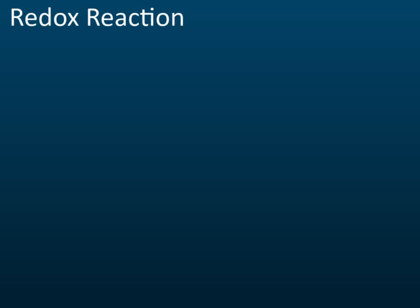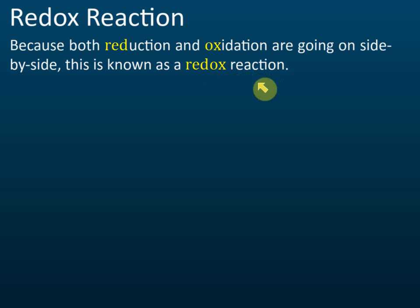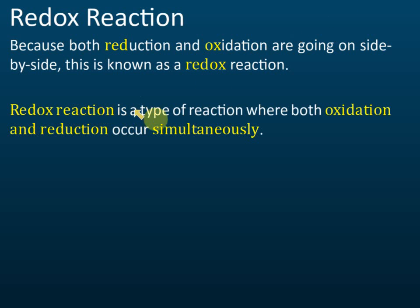Reduction and oxidation occur at the same time in what we call a redox reaction. 'Red' comes from reduction and 'ox' comes from oxidation — combined, they form 'redox.' A redox reaction is a chemical reaction where oxidation and reduction occur simultaneously. When there is reduction, there is always oxidation occurring at the same time.